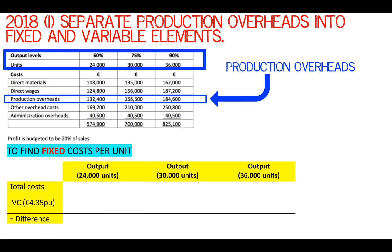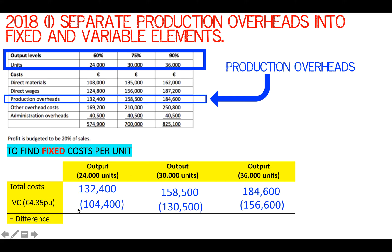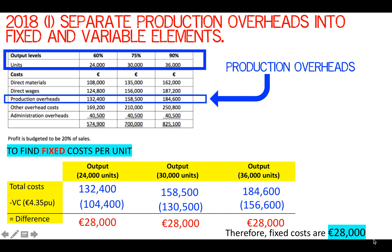To find the fixed cost, we substitute in the variable cost per unit that we found. We write down all the costs at the different levels of activity and multiply the number of units at each stage by the variable cost, giving the total variable cost. If we take the variable cost away from the total cost, that gives us 28,000 euro across the board. So the fixed costs are 28,000 euro — they do not change as the output changes.